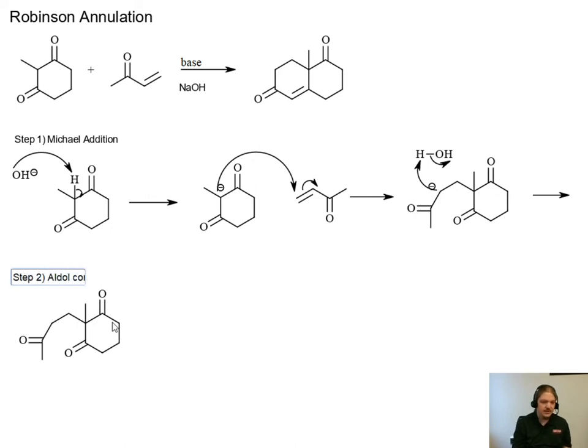And so this is the product after the end of the Michael addition step. Part two, then, is the aldol condensation. And there are lots of alpha positions next to ketones that can be deprotonated here.